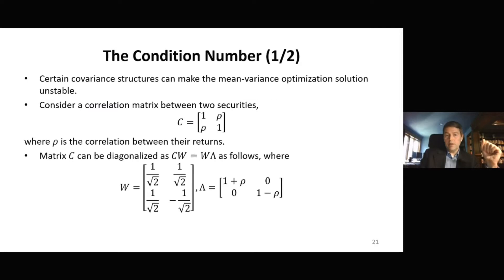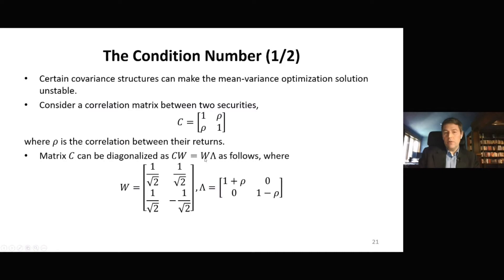Consider the smallest system that you can think of — just two securities. The correlation matrix could have this form: diagonals of ones, and then off-diagonal elements of rho, the correlation between the two securities. We can diagonalize this correlation matrix as CW equal W lambda, where W, the matrix of eigenvectors, will have this form, and lambda, the matrix of eigenvalues, will have this form. One of the eigenvalues will be one plus rho, and the other eigenvalue will be one minus rho.